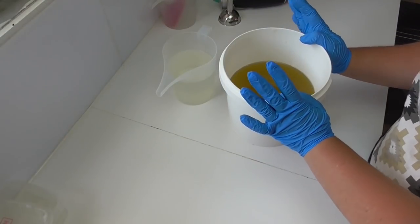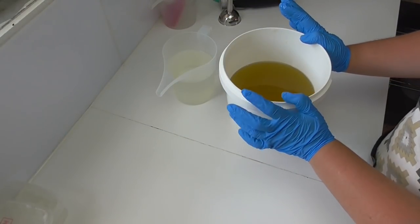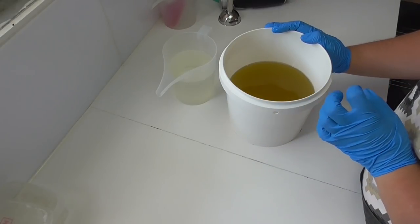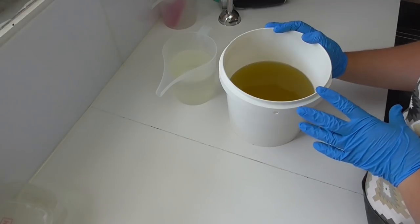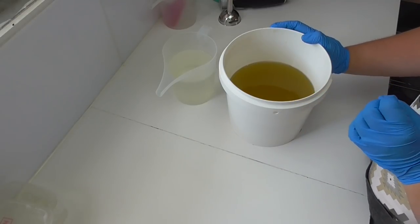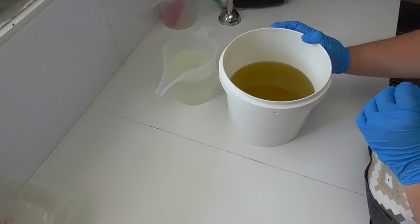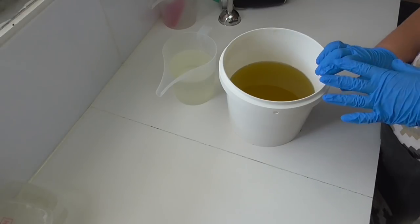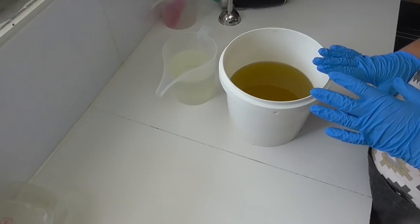The soap we're making today is Mint Mojito from Aroma. It has notes of white rum, sugar cane and spearmint. And I am hoping to do a white base because there is 0% vanillin. And I'm going to drop swirl two different greens and then do a hanger swirl through it as well. And then I'm going to decorate the top with some melt and pour embeds that we've been making.